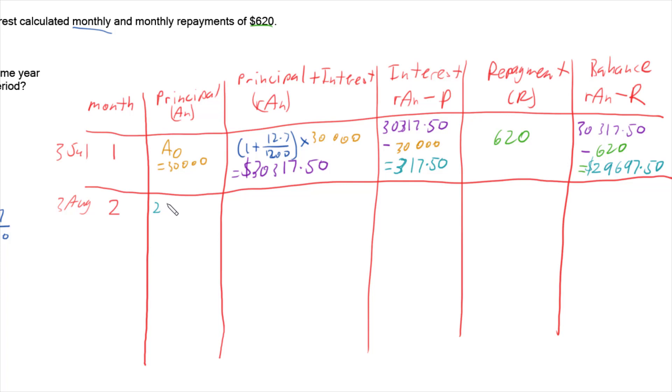Now, if we go through all our numbers again, we have 29,697.50 for our principal, because that's where we ended up the previous period. So that's where we start this period. We then multiply that number by our 1 plus 12.7 over 1200. So we're going to take that and multiply by 29,697.50. And so that's going to give us $30,011.80 in total principal and interest. So we take that number and we minus off the principal for this period. And that means this period, we have a grand total of $314.30 of interest added.